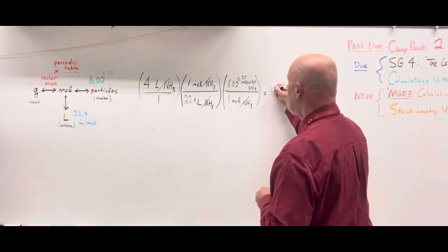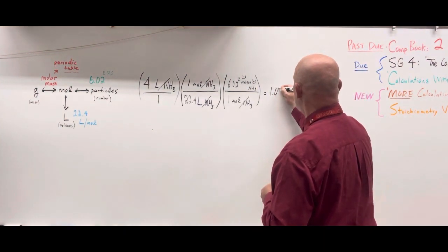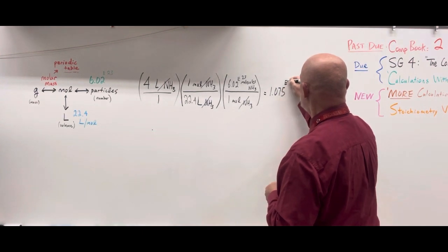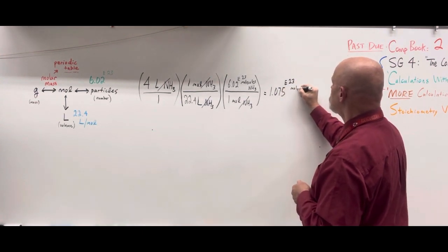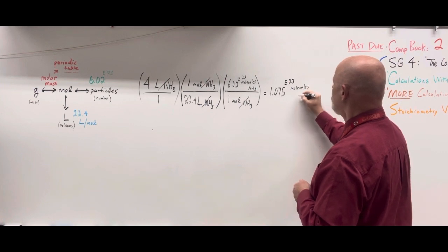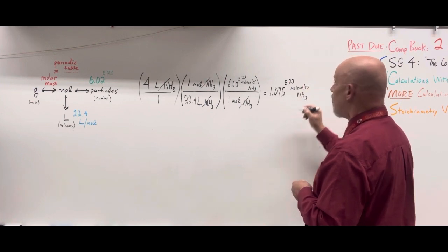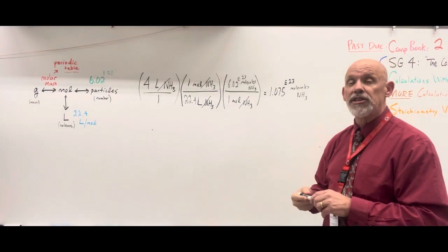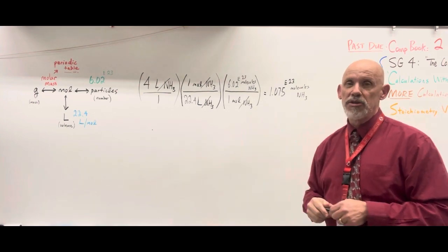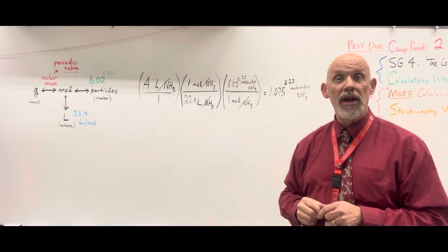1.075 times 10 to the 23rd molecules of ammonia. Molecules of ammonia because that's the unit of the substance that was not canceled. And I hope that was helpful.